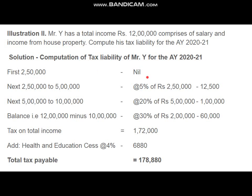As usual, the first 2 lakh 50,000 is nil — this part is the same for every assessee. The next 2 lakh 50,000 to 5 lakh, that additional 2 lakh 50,000, is taxable at the rate of 5 percent, giving a tax amount of 12,500. Next, from 5 lakh to 10 lakh — in this case the taxable income is 12 lakh — so that additional 5 lakh is taxable at the rate of 20 percent, giving a tax amount of 1 lakh.